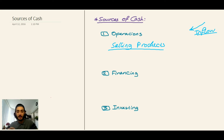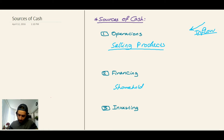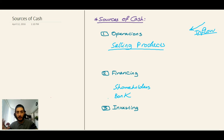Second, we have financing activities. Financing activities mean money coming from shareholders, or a loan from a bank or any financial institution. So any money coming from shareholders, a bank, or any financial institution will be financing activities. This is the second source of cash.